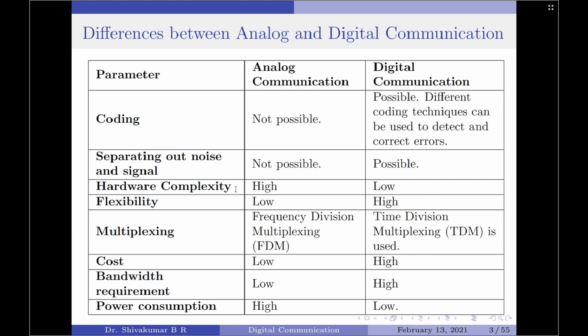The next parameter is hardware complexity. Analog communication has complex hardware whereas digital communication has less complex hardware. Since analog communication has complex hardware, the flexibility of analog communication is quite low, whereas for digital communication it is considerably high.